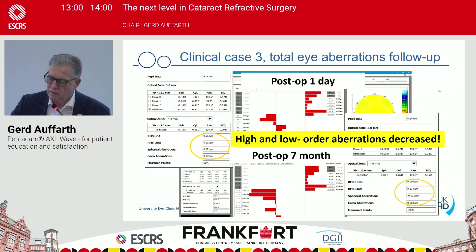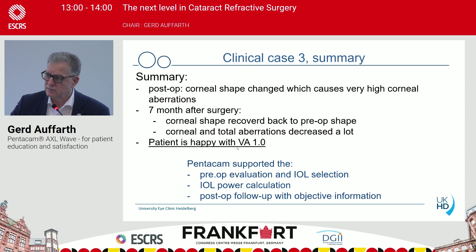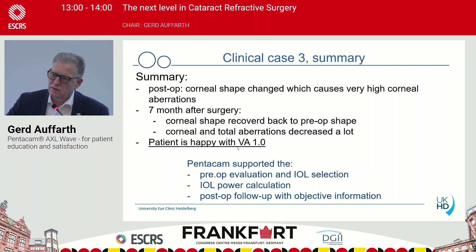After half a year, the high-order aberrations had changed — they didn't go to zero, but they became much smaller compared to directly after surgery. They were not exactly the same as preoperatively, but much reduced. The patient then had an uncorrected visual acuity of 1.0 and everything was fine. First of all, you did everything right — still, something like this can happen. But you can follow up with the Pentacam, explain to the patient why he has this, and tell him: let's just wait, it will maybe go away. Everything was under control.